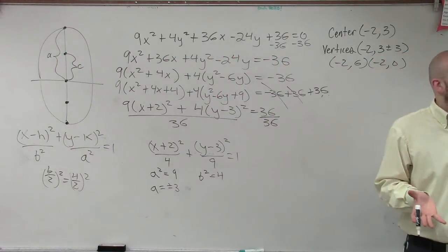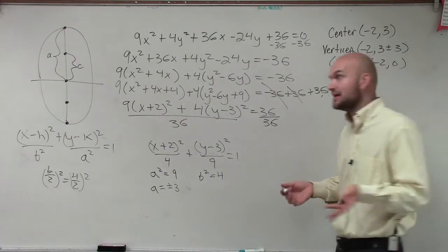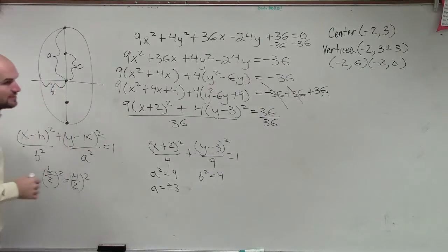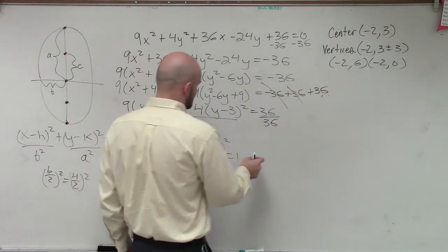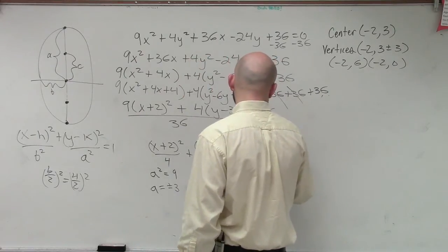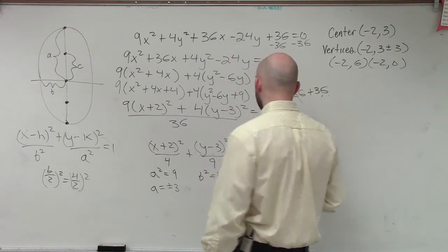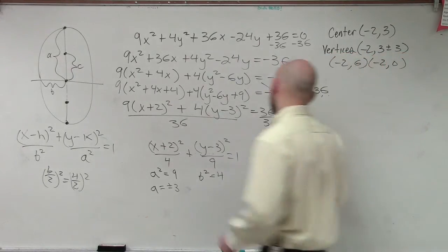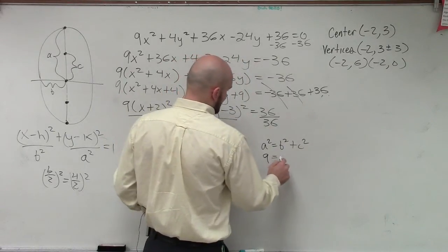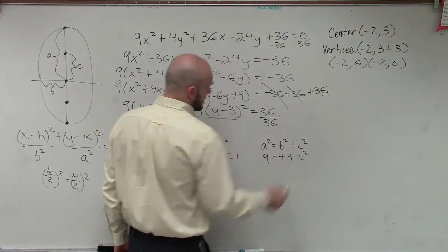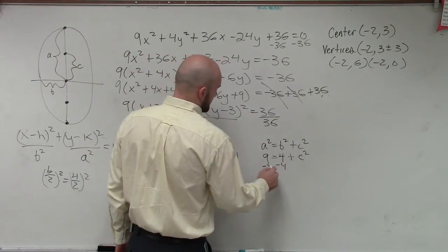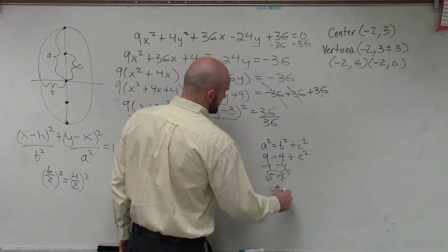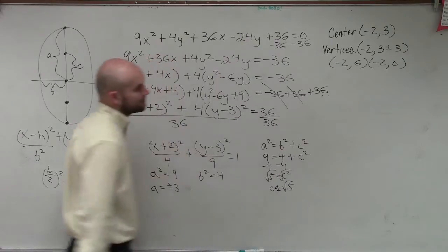However, if you guys remember, we did talk about the relationship between a, b, and c. Because we used a right triangle, and we said that a² = b² + c². So if we know a² is 9, b² = 4, and now we need to figure out what c² is. So we subtract 4, 5 = c², so c = ±√5.